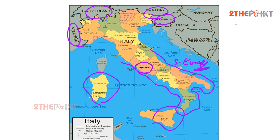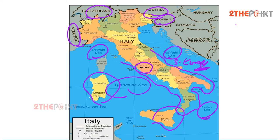Four different seas surround the Italian peninsula in the Mediterranean Sea from three sides: the Adriatic Sea from the east, the Ionian Sea from the south, and the Ligurian Sea and the Tyrrhenian Sea to its west. See you in the next session with some other interesting geographical locations. Thank you.